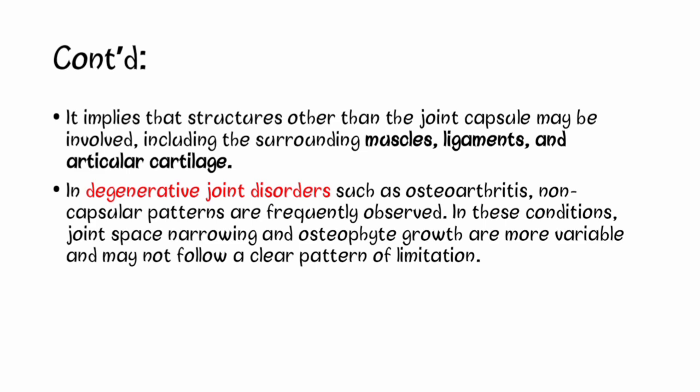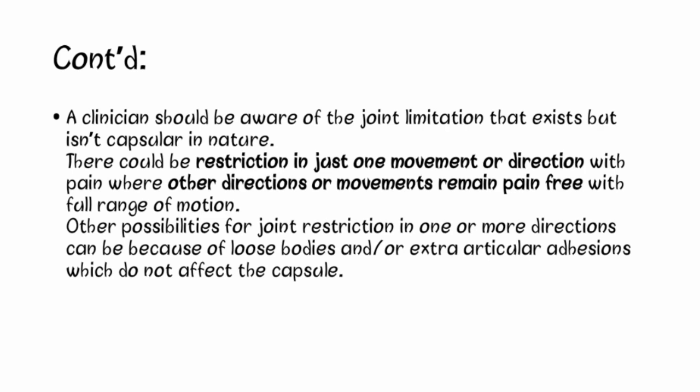In contrast to capsular patterns, which are commonly observed in inflammatory joint diseases, non-capsular patterns are commonly observed in degenerative joint diseases such as osteoarthritis. In these conditions, joint space narrowing and osteophyte growth are more variable and may not follow a clear pattern of limitation. For instance, with osteoarthritis of the knee, mobility limitation might happen in any direction and doesn't follow a regular pattern as in rheumatoid arthritis.